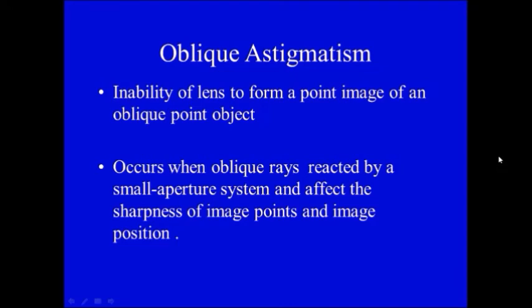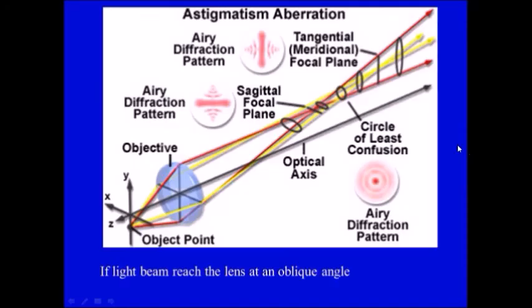Oblique astigmatism occurs because of inability of the lens to form point image of an oblique point object. It occurs when oblique rays refracted by a small aperture system and affect the sharpness of image points and image position.